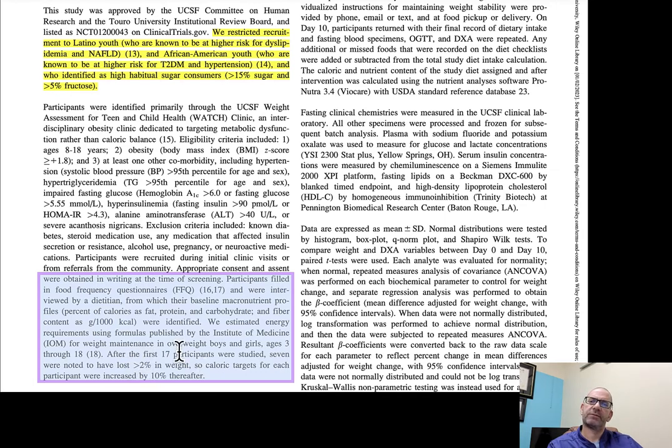After the first 17 participants were studied, seven were noted to have lost 2% of body weight. So caloric targets for each participant were increased by 10% thereafter. 40-ish percent of the 17 participants were noted to have lost weight, and so they had to make caloric adjustments. The isocaloric part wasn't necessarily held, and weight stability wasn't accounted for.